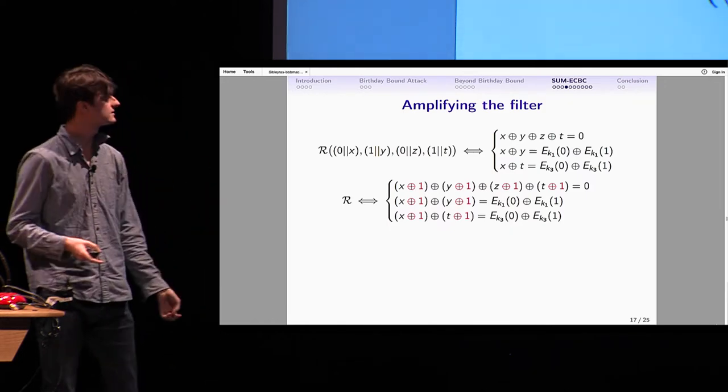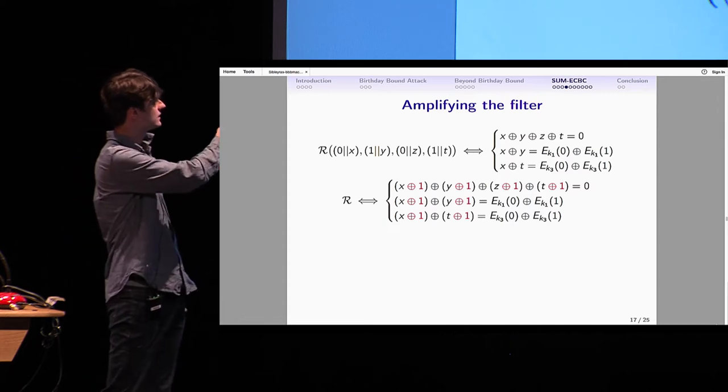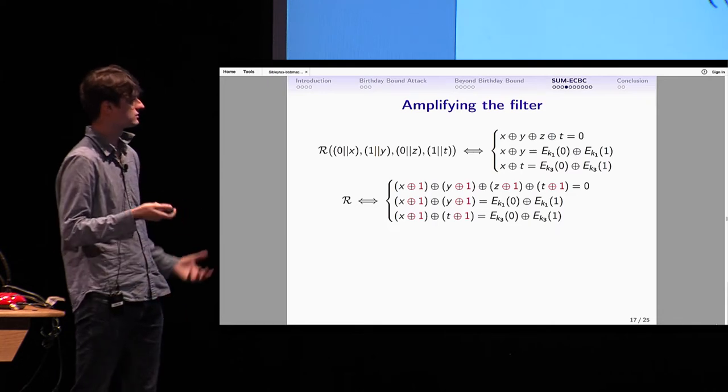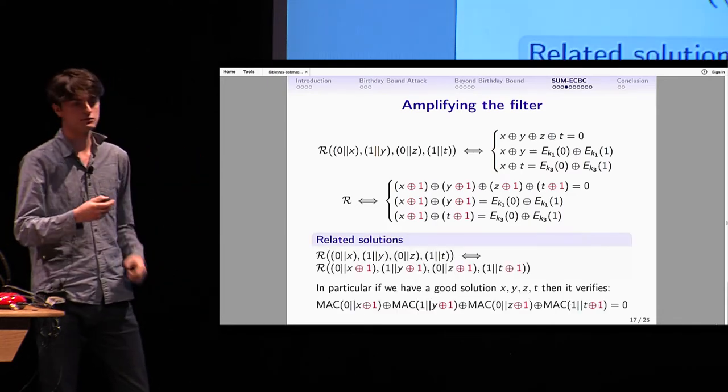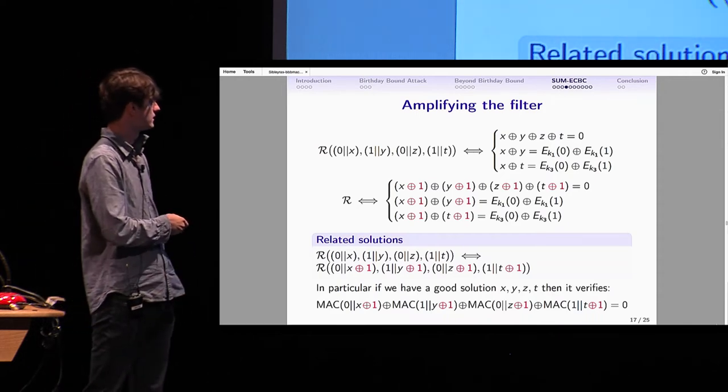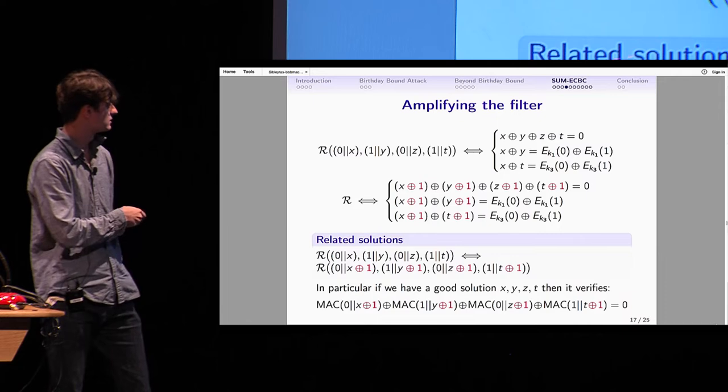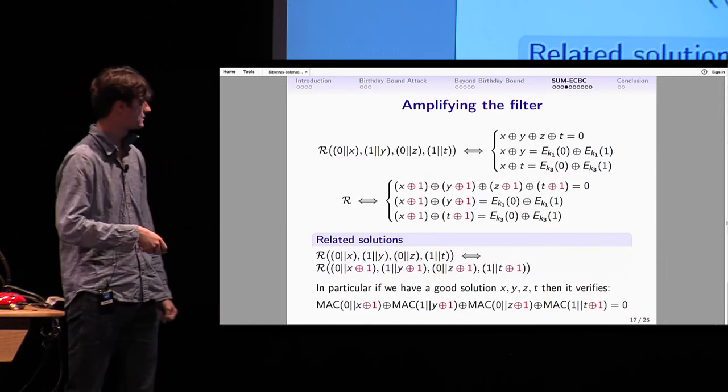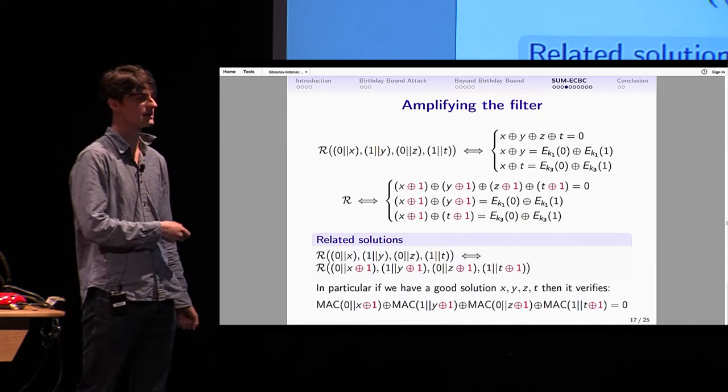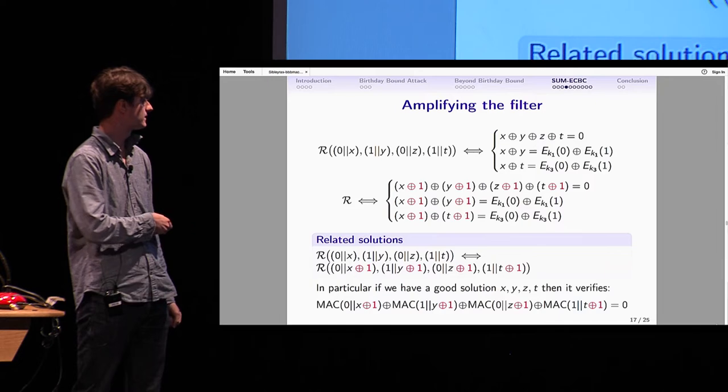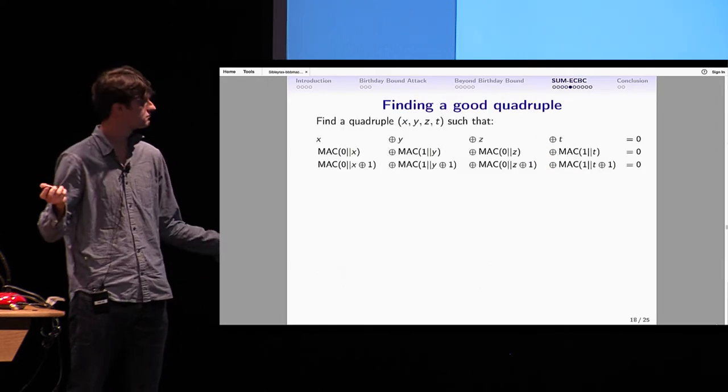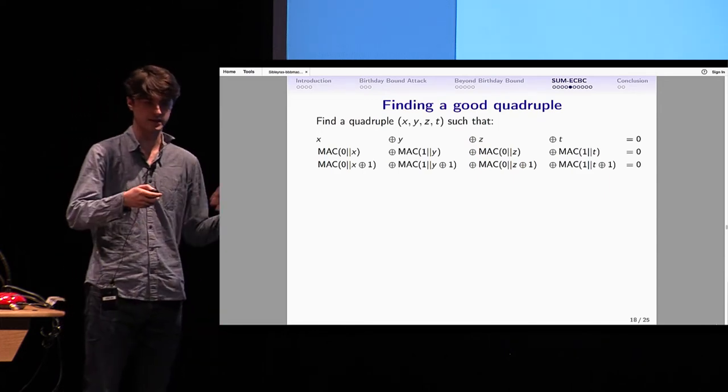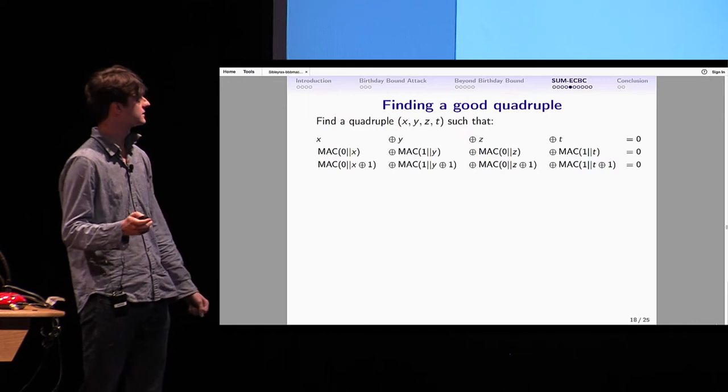Actually, that's the part that is less generic. You have to look at the relation R to find how to amplify the filter. For SumECBC, it's pretty straightforward. If you look at the relation R, you see you can add 1 to X, Y, Z, and T, and it still respects the relation. You should have no change. That means we have some related solutions. If X, Y, Z, and T respects R, then X⊕1, Y⊕1, Z⊕1, T⊕1 also respects R. In particular, that means that for a good solution, you have those MACs that must sum to 0. That's another filter. Now you get 3n-bit filters.